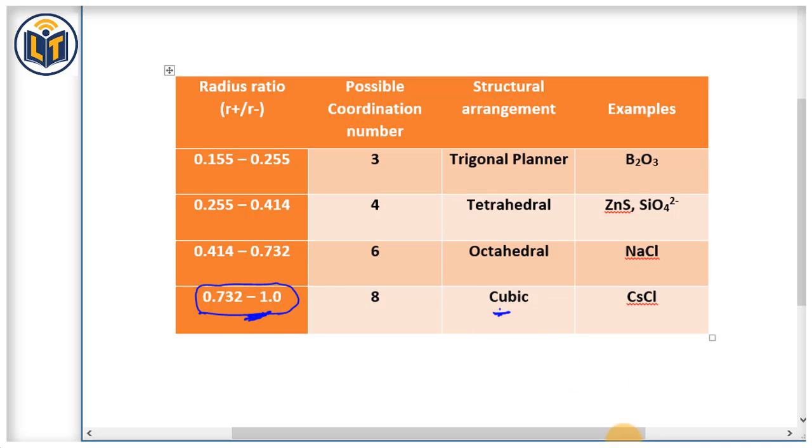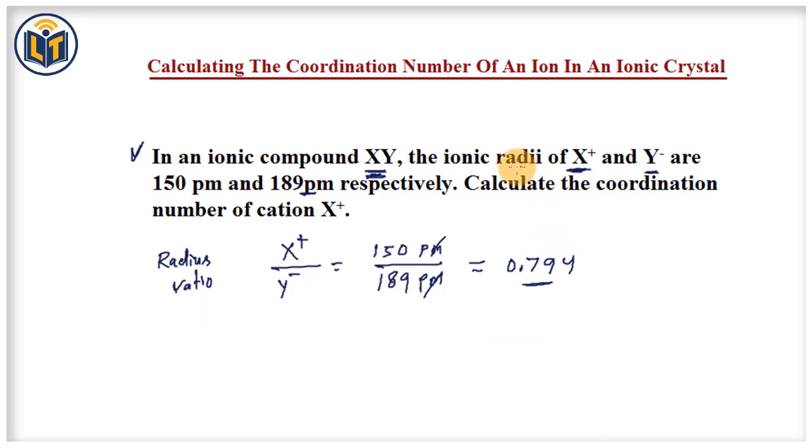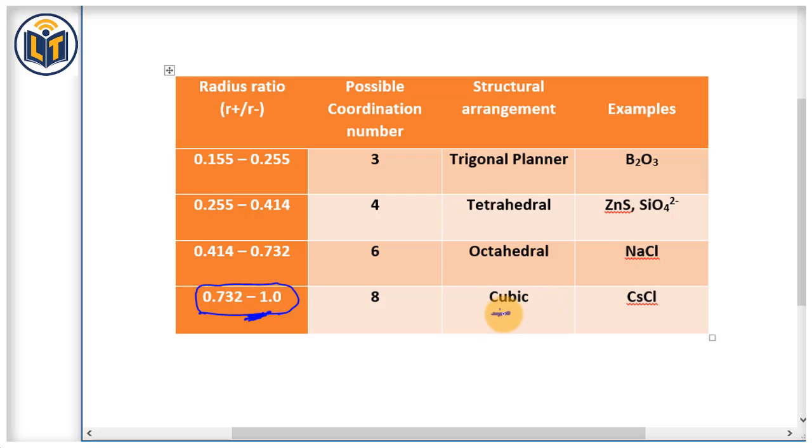Next point: if we compare the ionic radius of cations and anions, you can see that the size of the radii of anions is greater than cations. It means that Y- ions, means anions, form the close-packed structure, and X+ ion is occupying the cubic voids. For cubic voids, the coordination number is 8.